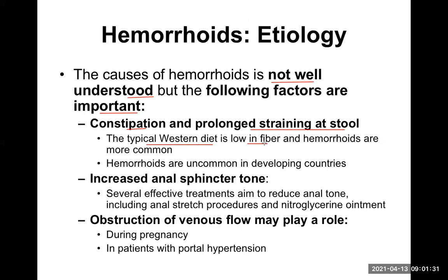To prevent hemorrhoids, one important treatment we tell patients is to increase fiber in the diet. Fiber-containing foods include vegetables and fruits — these are the most important ones. We need to include them regularly in our diet. Along with that, drink plenty of water and do physical exercise. If we pay attention to these things, a person will not be constipated and there is no chance of developing hemorrhoids.